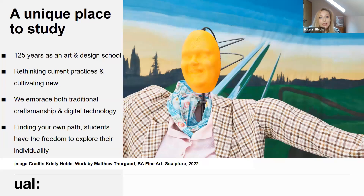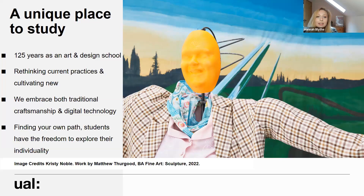Camberwell has a really long and rich history as an art school — we recently celebrated being 125 years old. It was purpose built to be an art school and when you come and visit you'll see that reflected in the architecture. The original building is Victorian, we then have a brutalist frontage, and in the last few years we've added a new academic building which provides new studio spaces, resources, and a new halls of residence. Our ethos is about rethinking current practices and cultivating new ones, embracing both traditional craftsmanship and new digital technology.